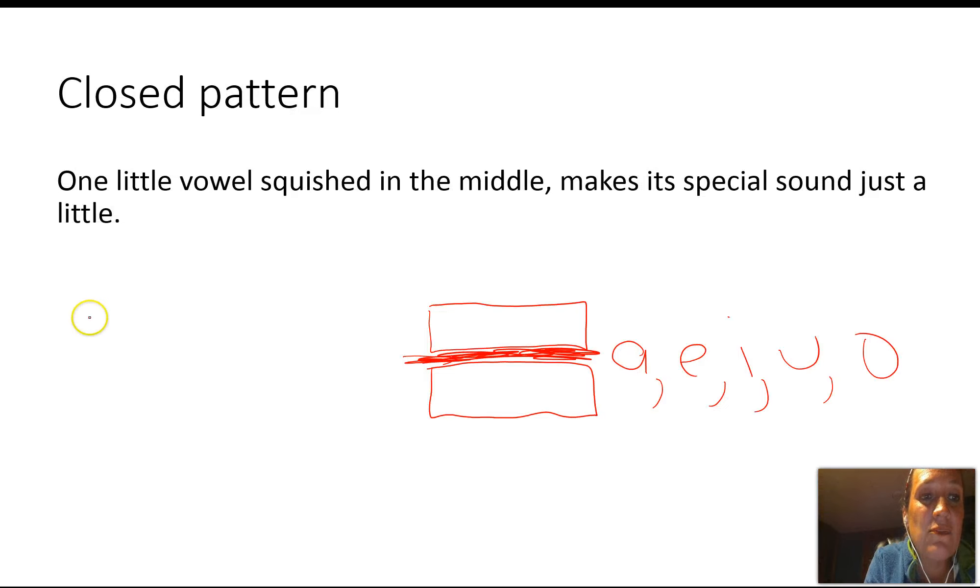Let's take a look at another word. If we have this word, we already know that the I is gonna make that ih sound because it is squished in the middle. So we have p-ih-n, pin. Yes! Let's take a look at another word. Here we have l-ah-ck, lock. See how easy it is? When we can see that that vowel is squished in the middle, we already know what sound it's going to make.